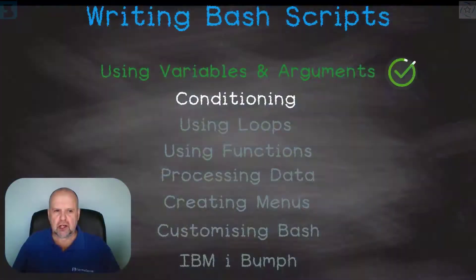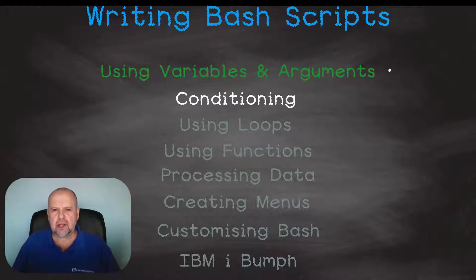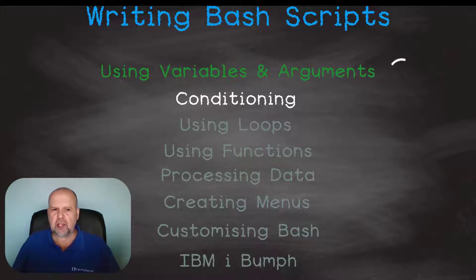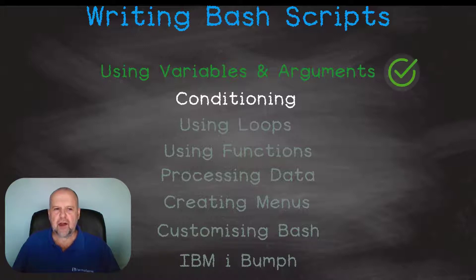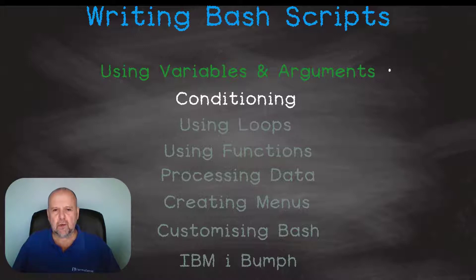In this section of writing bash scripts we'll be covering how we can condition bash to execute code under certain conditions. If you missed our previous video in this series on using variables and arguments in bash scripts, it can be found on our channel. Please subscribe to be notified when our next video is released. Let us get this topic started.